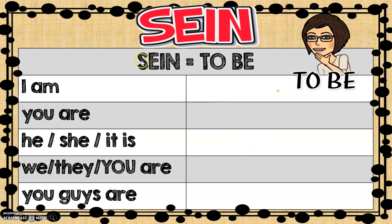Here is the chart. Here's the infinitive 'sein' and the English infinitive 'to be.' I am, you are, he is, she is, it is, we are, they are, you formal are, and the plural you — you guys are.